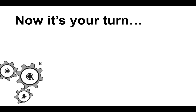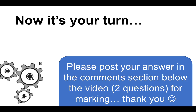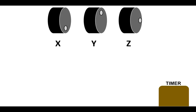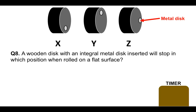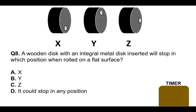Now it's your turn — I'm going to give you two questions here. Put your answer in the comments section below. Question eight: a wooden disc with an integral metal disc inserted will stop in which position when rolled on a flat surface? Is it X, Y, or Z? You have to decide which is heavier — wood or metal. Is it A — X, B — Y, C — Z, or D — it could stop in any position? Put your answer in the comments section below for marking.